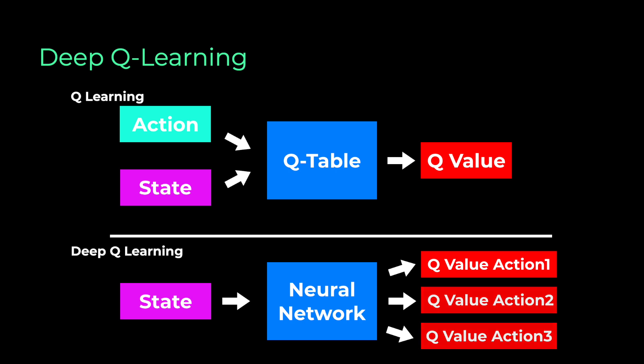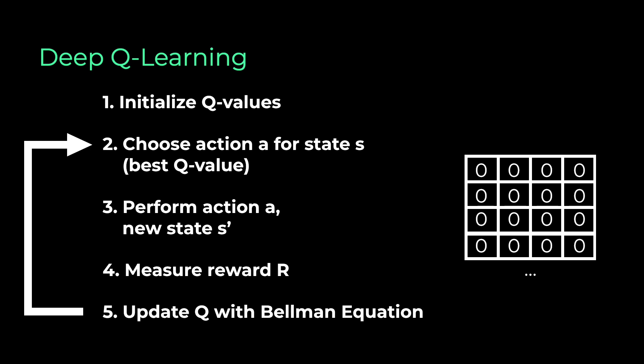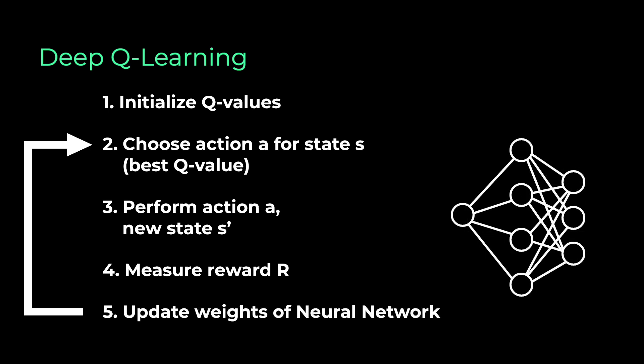So now we use a deep neural network that gets the state as input and produces different Q values for each action. And then again, we can choose the action with the highest Q value. The learning process is still the same with this iterative update approach. But instead of updating the Q table, here we update the weights in the neural network so that the outputs get better. And this is how deep Q learning works.